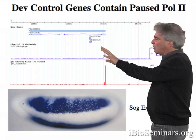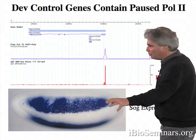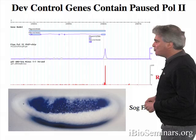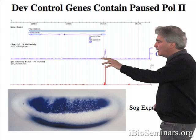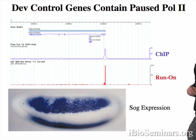This is for our old friend the SOG gene, which is activated by low levels of the dorsal gradient in the lateral neurogenic ectoderm. SOG is kept off in the ventral mesoderm by the snail repressor. What you see here is the binding of RNA polymerase II to the promoter region of the SOG gene before it's switched on in the early embryos — we refer to this as paused polymerase.